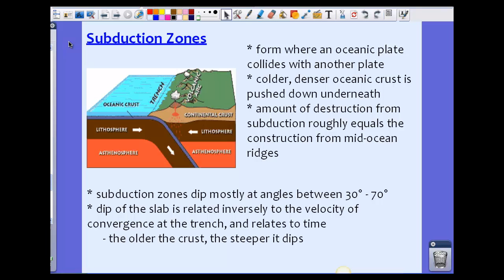Subduction zones dip mostly at angles between 30 degrees and 70 degrees. If you take a look at this picture, sometimes you see them a little bit more, sometimes a little bit less, but that dip at the subduction zone typically is between 30 and 70 degrees.